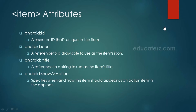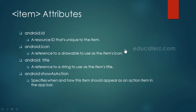For showAsAction, there are properties like 'never', 'always', and 'ifRoom'. If set to 'ifRoom', the option will be visible to the user if space is available; otherwise it will be icon-based. That is all about menus in Android. Thanks for watching educators.com — we'll catch up in the next session and discuss options menu.